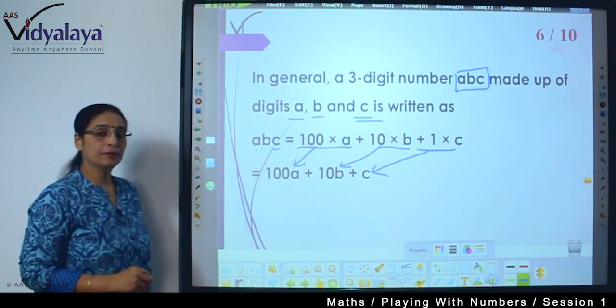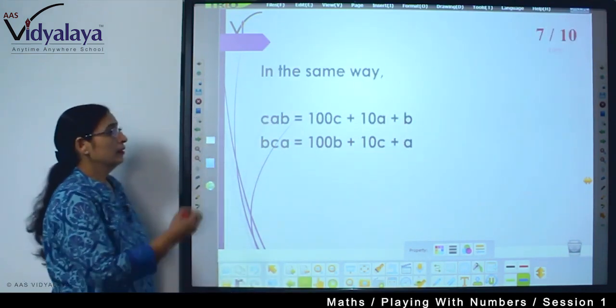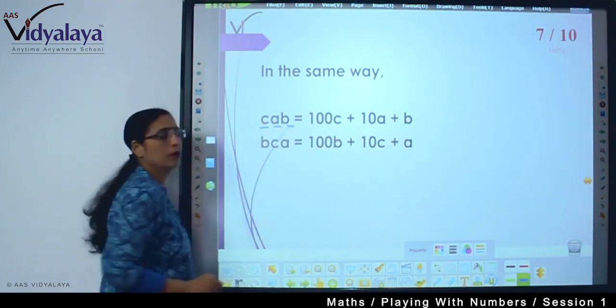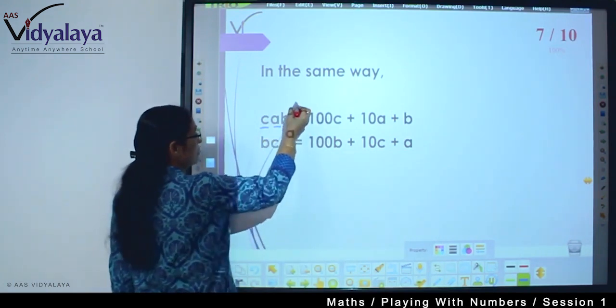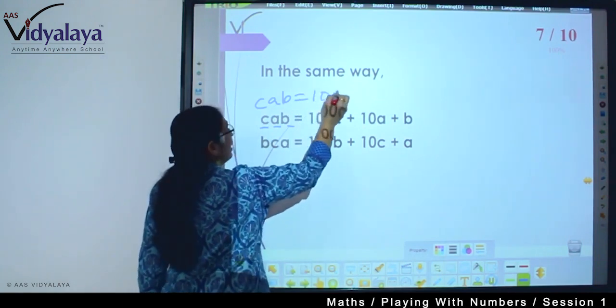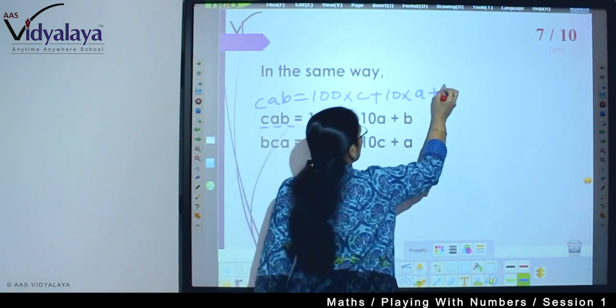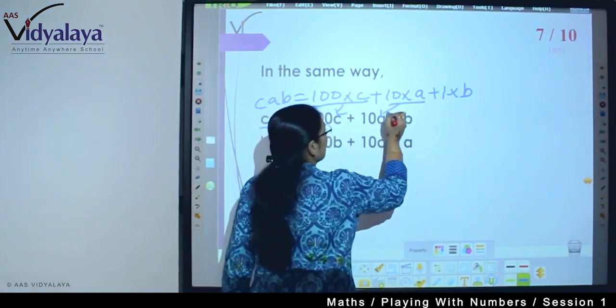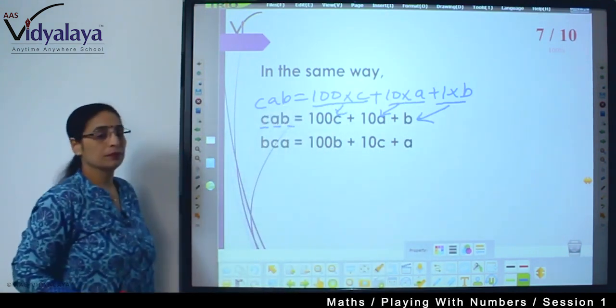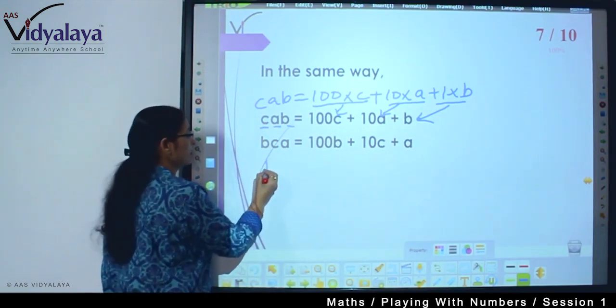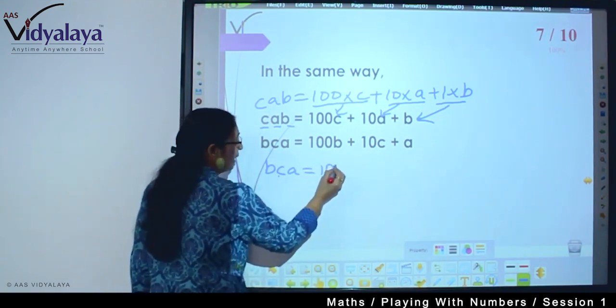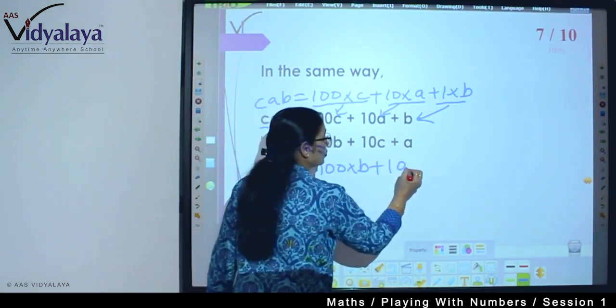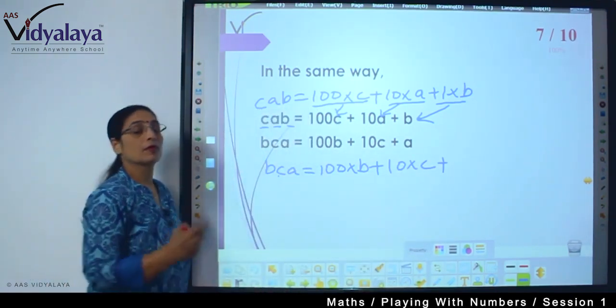Now if we reverse it cba, you can now make it in this way. If we do cab, so it becomes hundred c plus ten a plus b. Means cab can be written as hundred into c plus ten into a plus one into b. hundred into c becomes hundred c, ten into a becomes ten a and one into b becomes b. And if we change to bca, so bca can be written as hundred into b plus ten into c, and how about a? One into a.